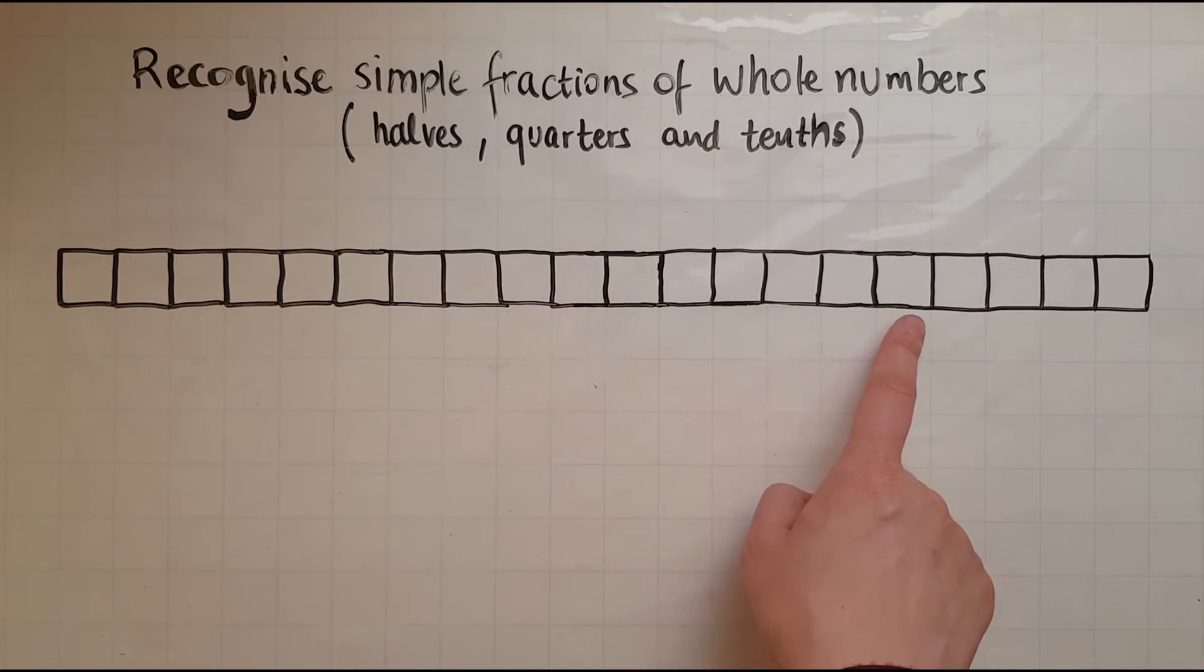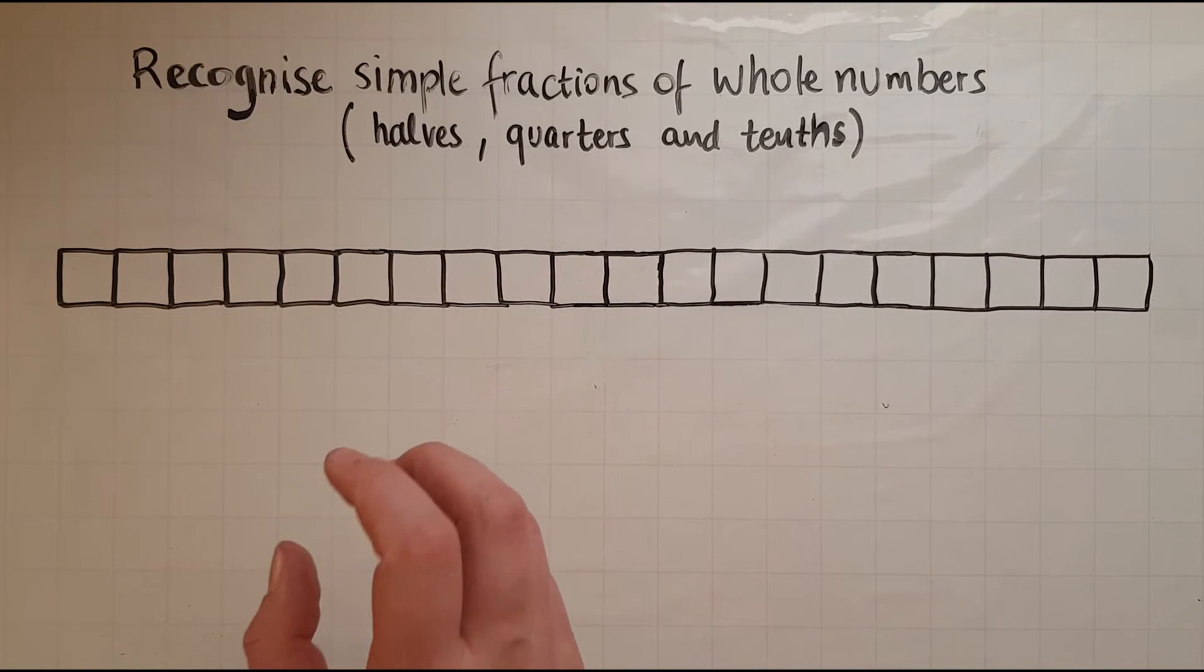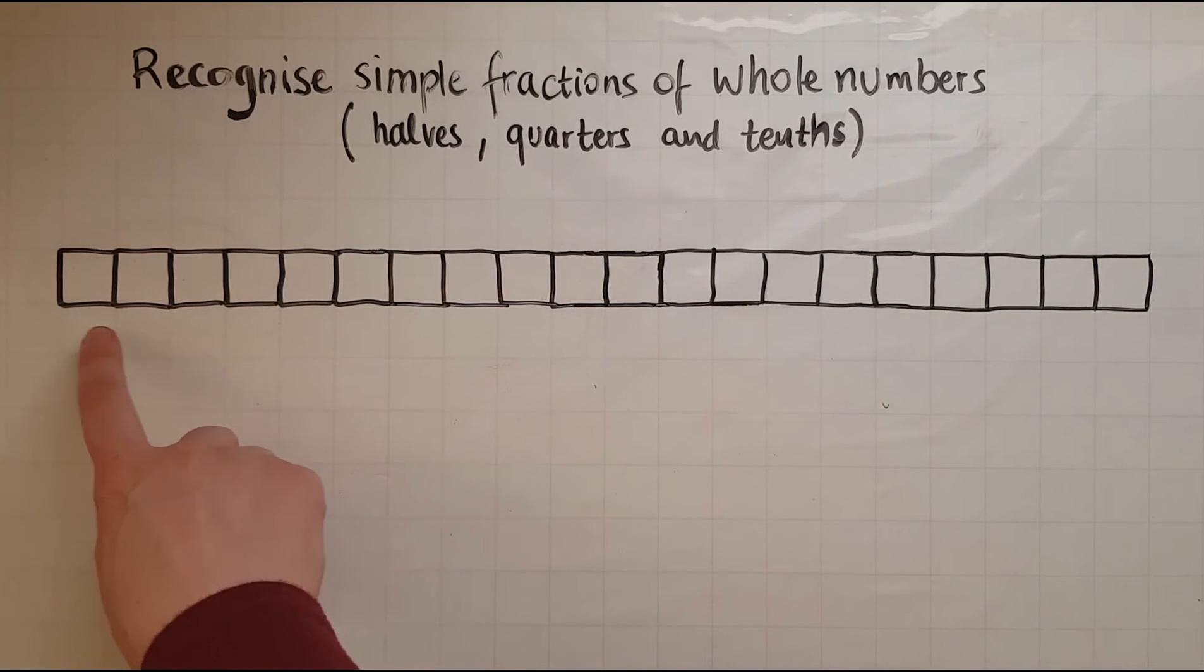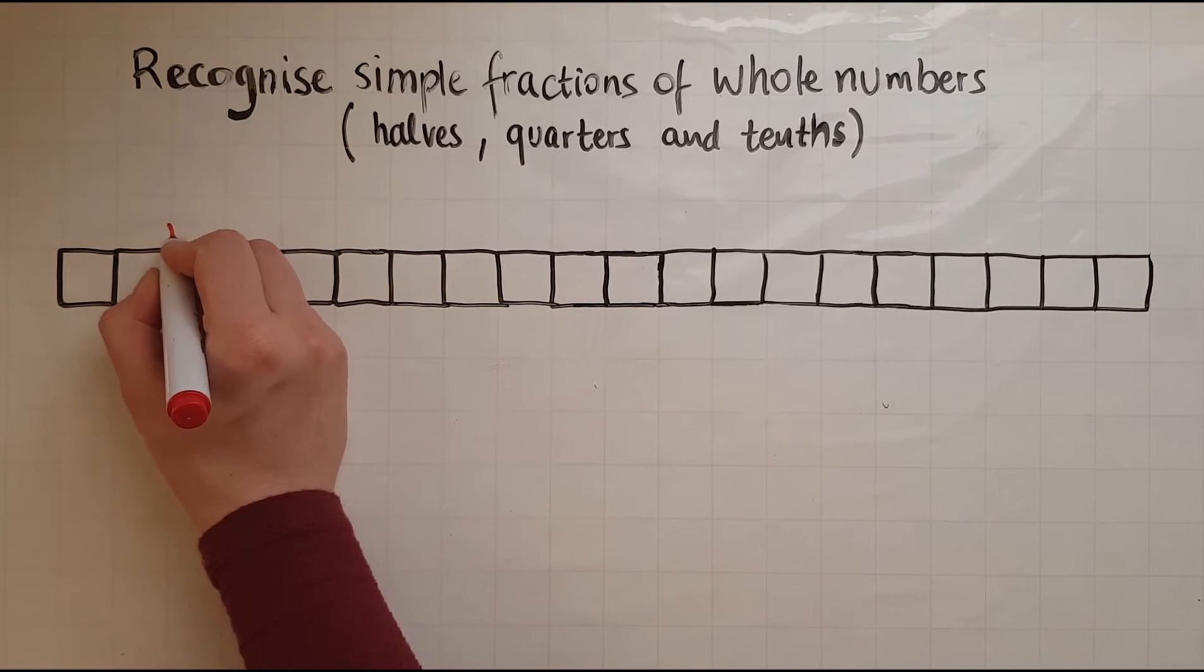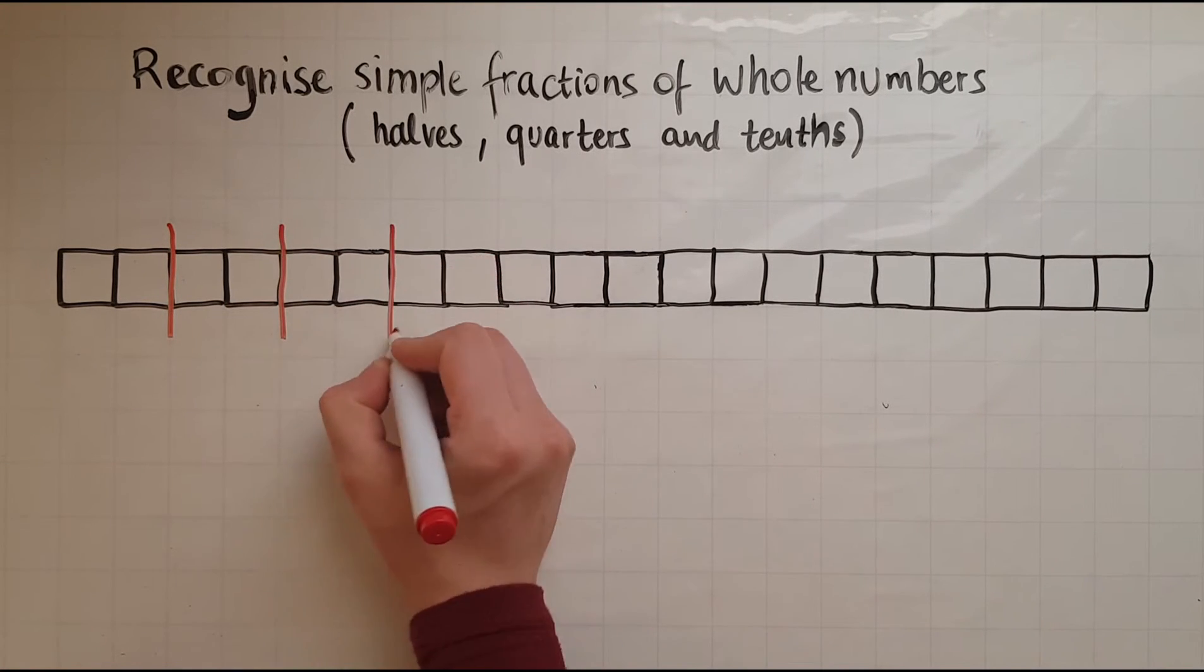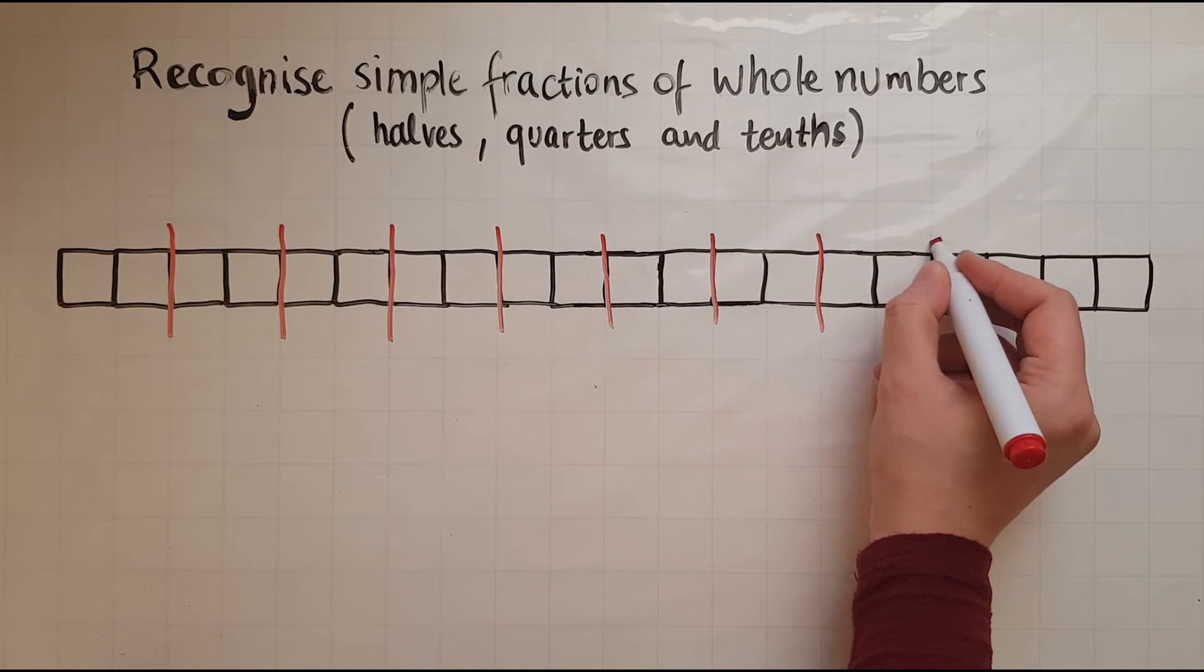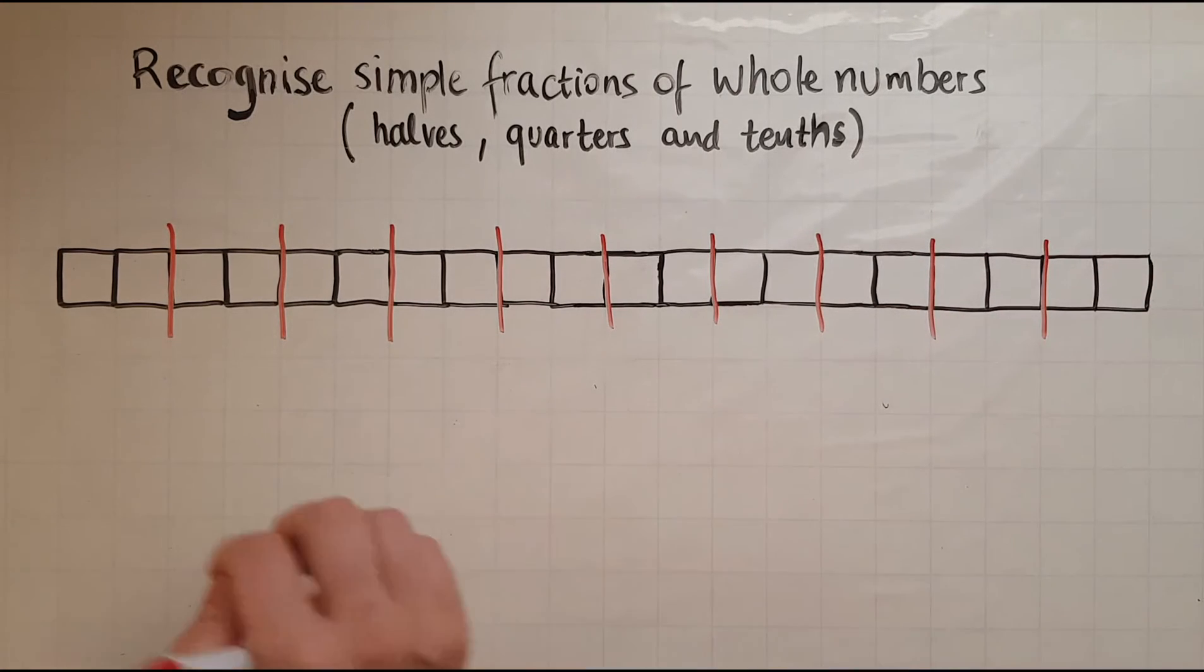But I want to create 10 equal parts. So I suppose if this represents a part, so 2 squares represent a part. Again, another 2 squares apart, 2 squares and so on. Let's see if I can create 10 equal parts.